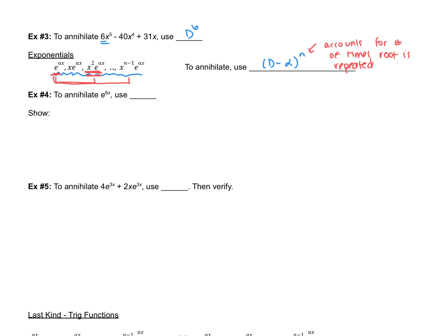For example, to annihilate e^(6x), our alpha is 6, so we use D − 6, and that root happens only once. To verify, applying (D − 6) to e^(6x) using linearity gives D·e^(6x) − 6·e^(6x) = 6e^(6x) − 6e^(6x) = 0. So D − 6 is indeed the annihilator of e^(6x).